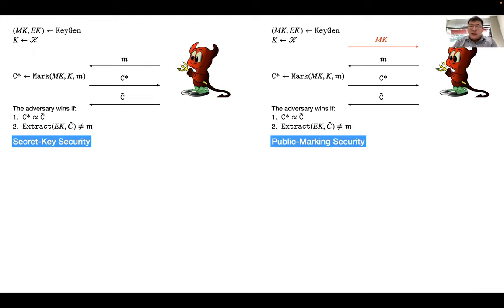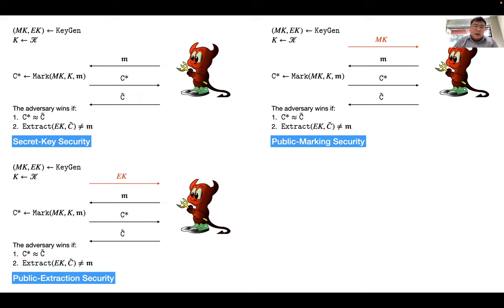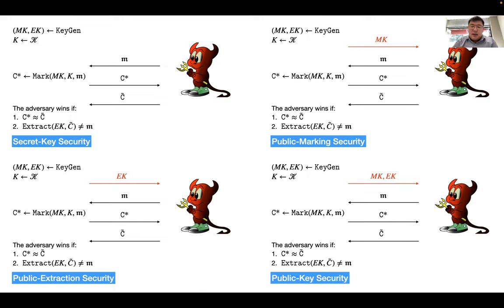We can also consider a stronger adversary that can learn the marking key — this is called public marking security. Alternatively, we can consider an adversary that learns the extraction key but not the marking key — this is called public extraction security. Finally, we can consider public key security, where the adversary learns both the marking key and the extraction key.